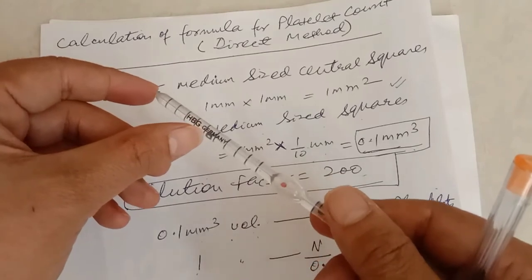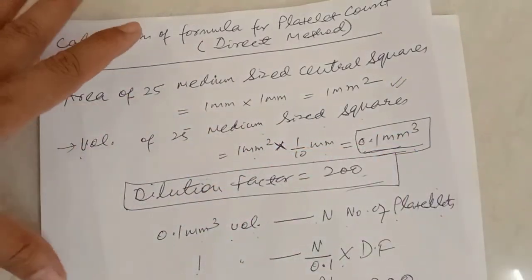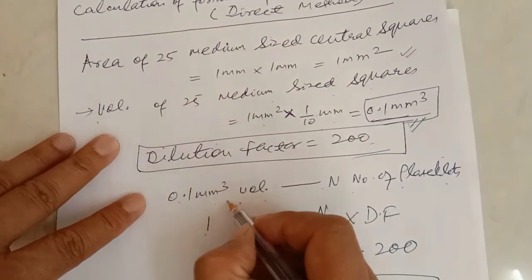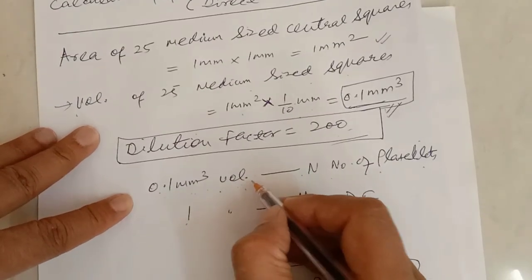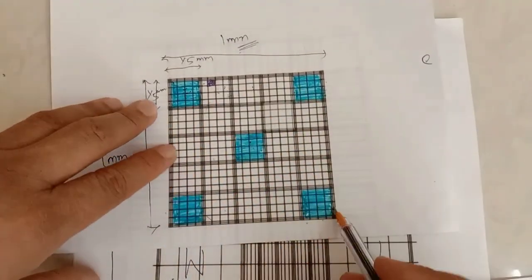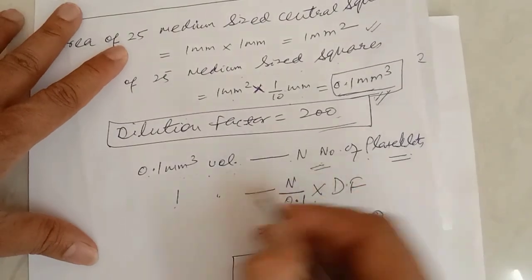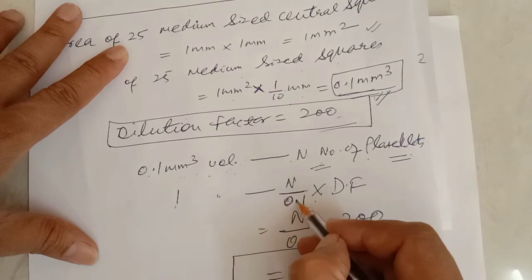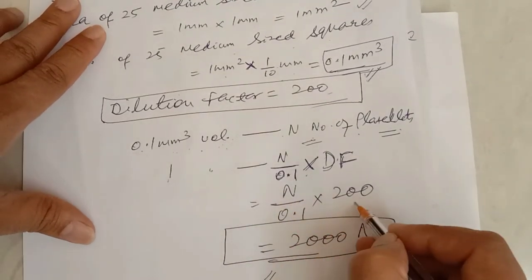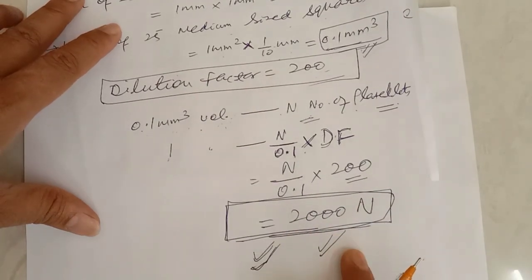The dilution factor is the same for platelet counting — 200 — because we draw blood to 0.5 and diluting fluid to 101 using the RBC pipette, only changing the diluting fluid. If n platelets are counted in all 25 medium-sized squares, then platelet count = n ÷ 0.1 × 200 = 2000 × n. So the formula for platelet counting is: Platelet count = n × 2000. Thank you very much.